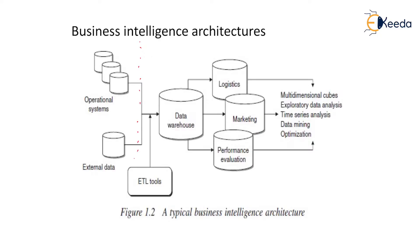The first tier consists of operational systems and external data — this is called Tier 1. Tier 2 consists of data warehouse and ETL tools. In Tier 3 we have individual databases like logistics database, marketing database, performance evaluation database, etc. These tiers perform exact operations in business intelligence and provide analysis to support proper decision-making.